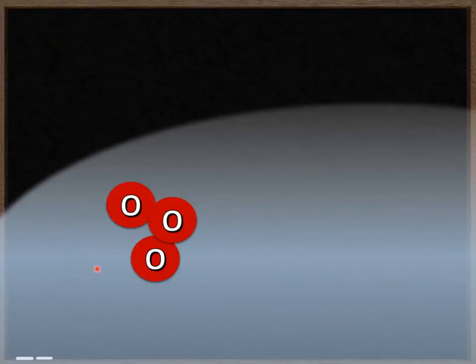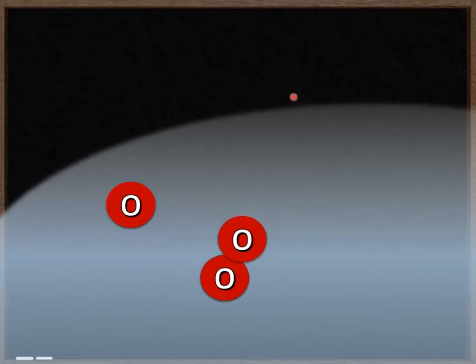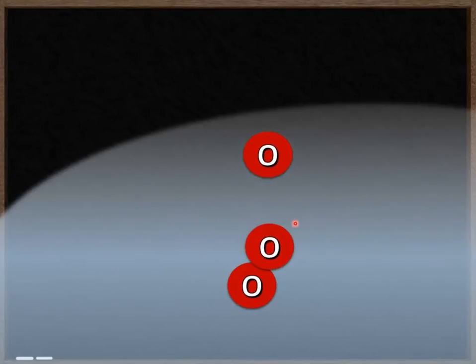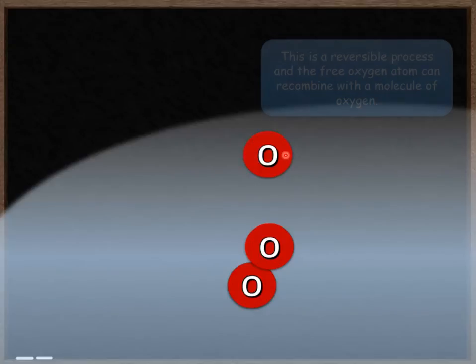So here's my molecule of ozone. You can see it's O3. So my harmful UV radiation comes in. It's absorbed by the ozone and the ozone breaks into two smaller parts: oxygen, which is O2, this molecule here, and then a free atom of oxygen here.